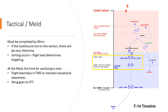What I mean by that is everyone has to completely understand what the picture looks like in front of them, and everyone has to know who they're going to target and shoot at. By the time we hit the meld at 40 miles, sanitizing has to stop. The flight will stay in TWS to maintain situational awareness, but the rest of the wings should go over to single-target track on the target they've been assigned.